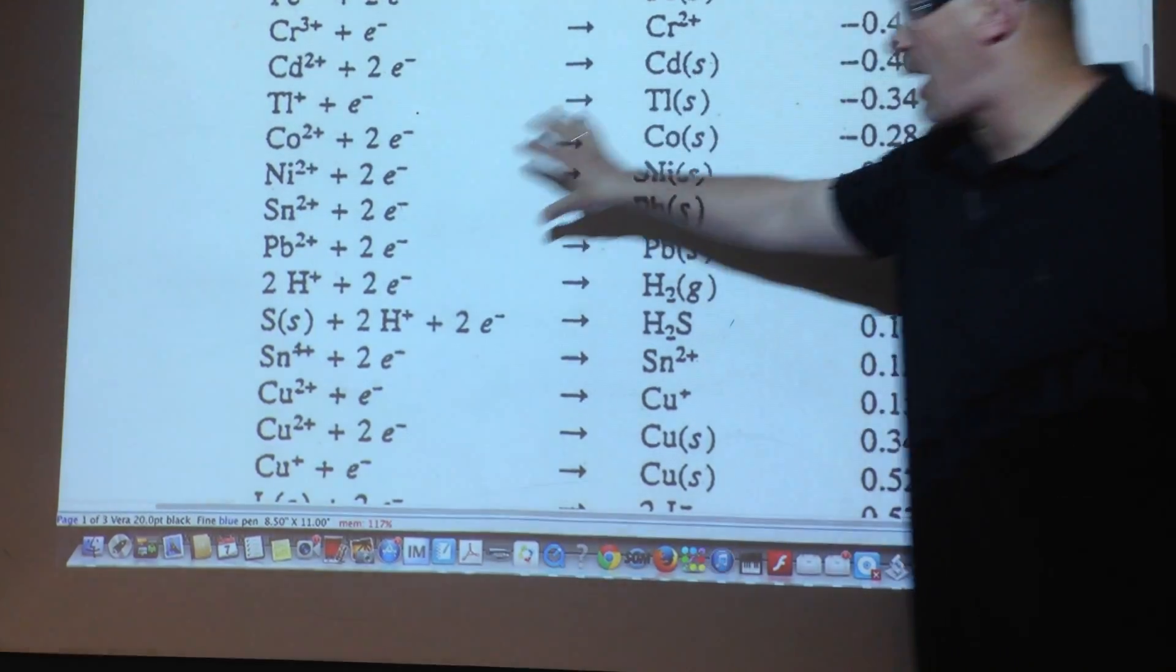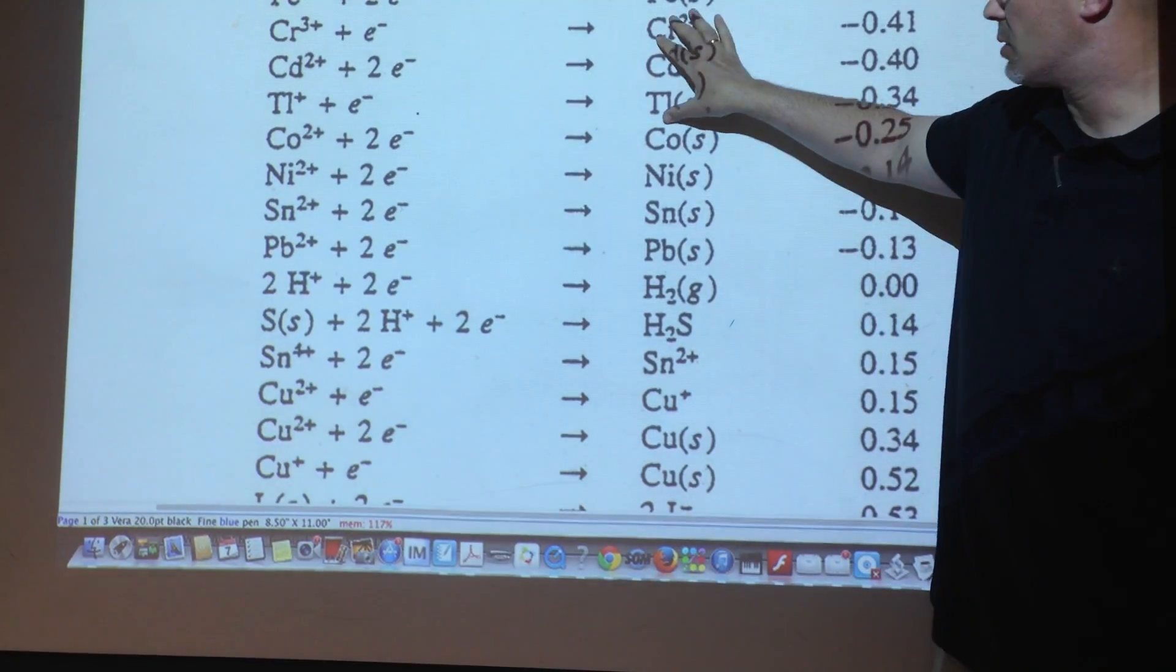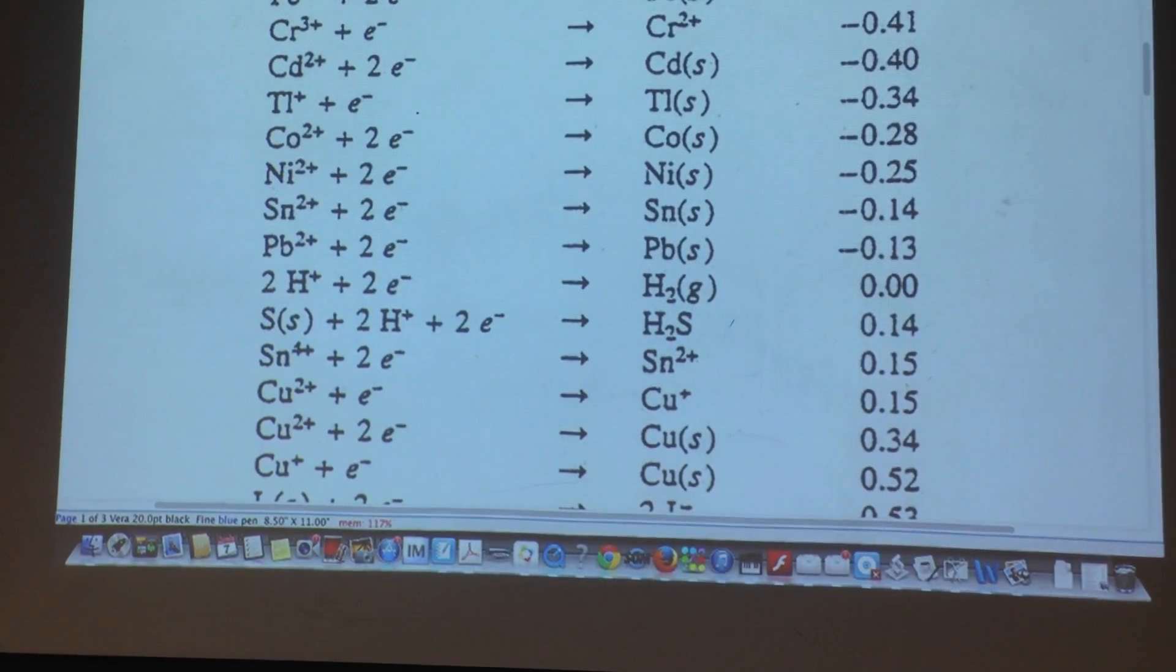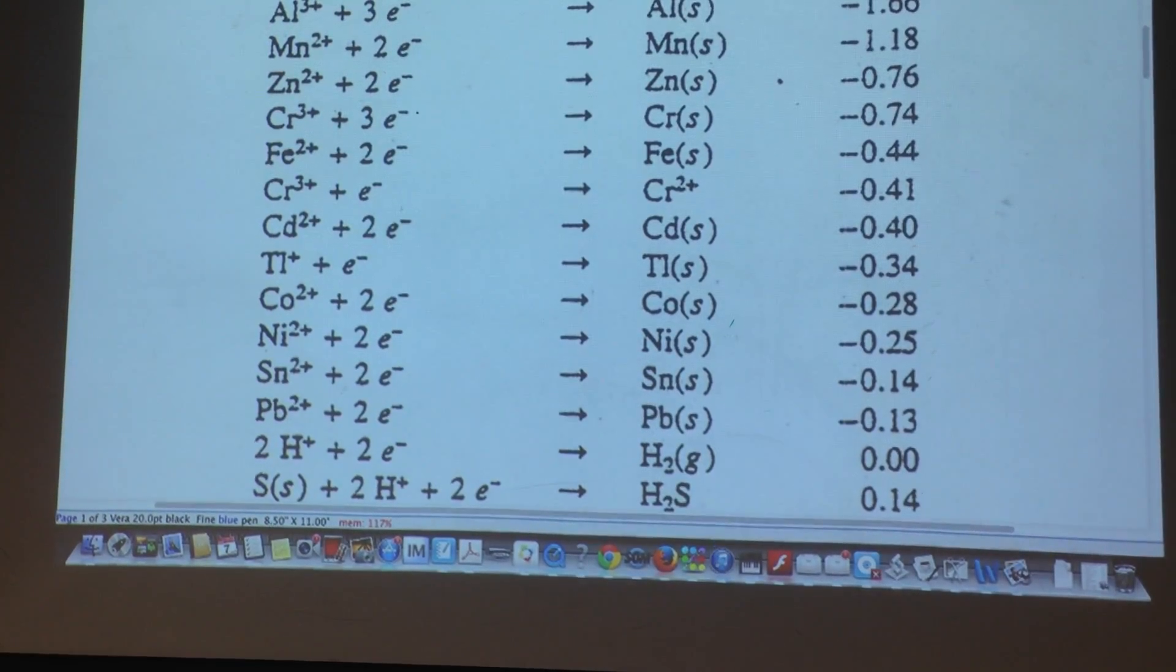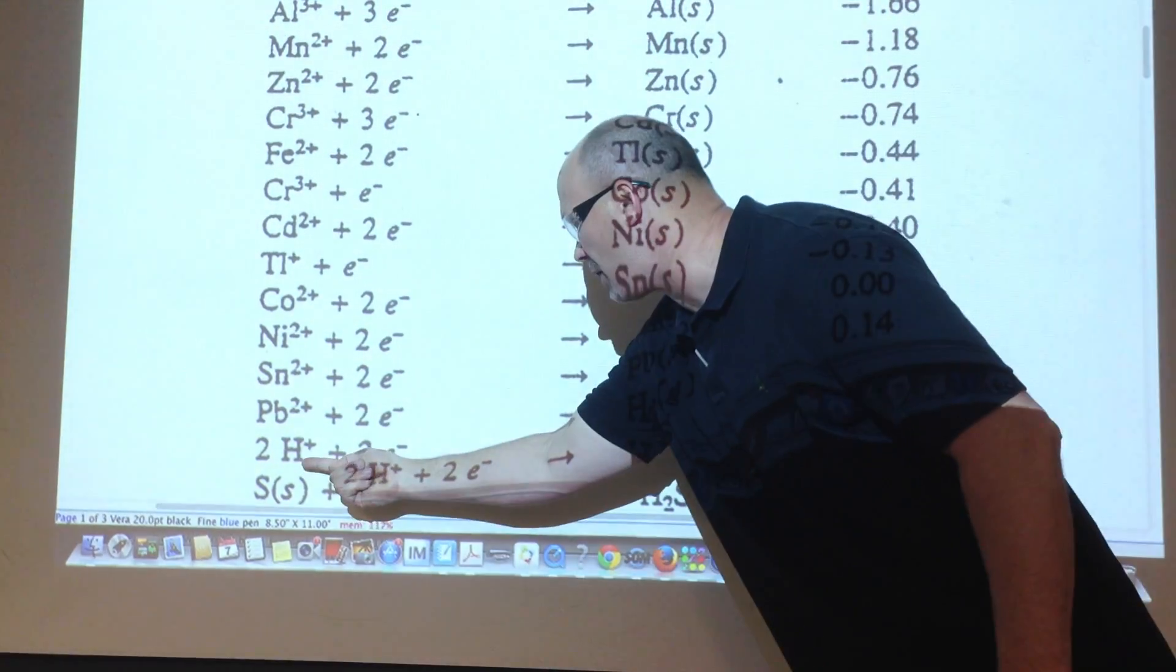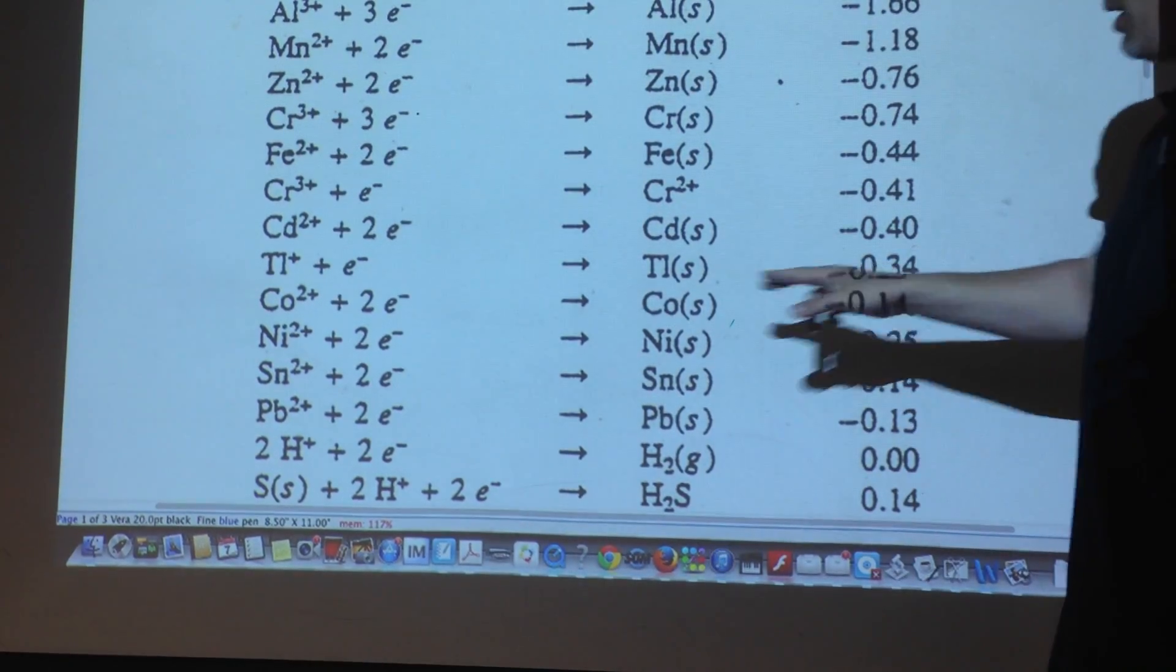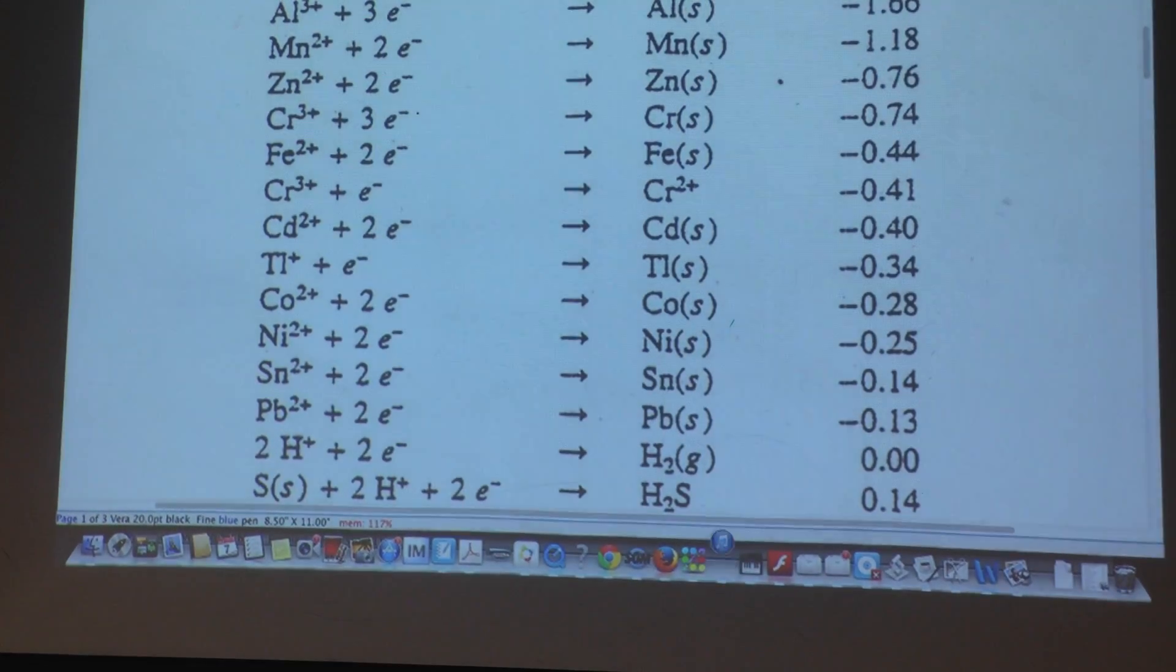So the H+ ions from the acid will react with the zinc. Where is the zinc? Zinc is a reactive metal, who is above here, right? It'll react with the zinc. Because zinc, when it oxidizes, is positive 0.76 in combination with the H+. That's why the standard cell made those values. But the copper, who's below it, is not. So I can hollow out this penny with hydrochloric acid. So let's do that.